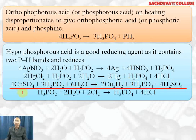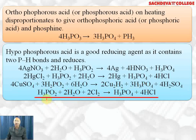Copper sulfate gets reduced by hypophosphorous acid, and H₃PO₂ itself gets oxidized to H₃PO₄ while sulfuric acid is formed. H₃PO₂ also gets oxidized by chlorine in aqueous solution to give H₃PO₄ plus 4 HCl, and chlorine gets reduced to chloride ion.